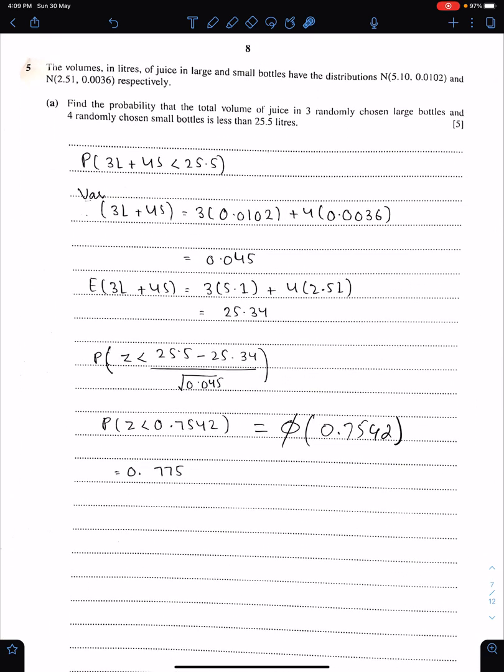Next question. The volumes in liters of juice in large and small bottles have the normal distributions, respectively. Point A: Find the probability that the total volume of juice in three randomly chosen large bottles and four randomly chosen small bottles is less than 25.5. This is so simple.